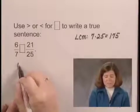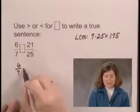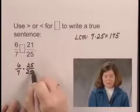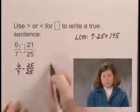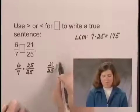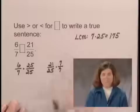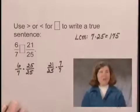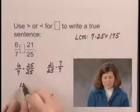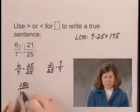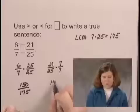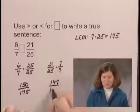For 6/7, I multiply by 25 over 25. For 21/25, I multiply by 7 over 7. Multiplying numerators and multiplying denominators, I get 150 over 175, and I get 147 over 175.